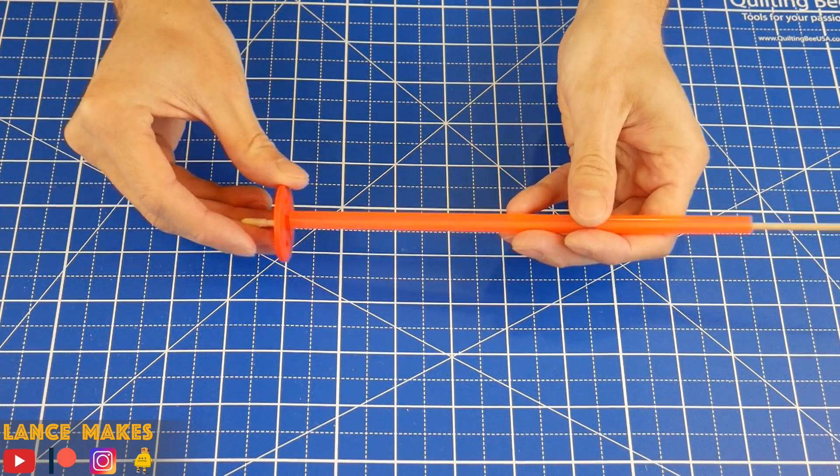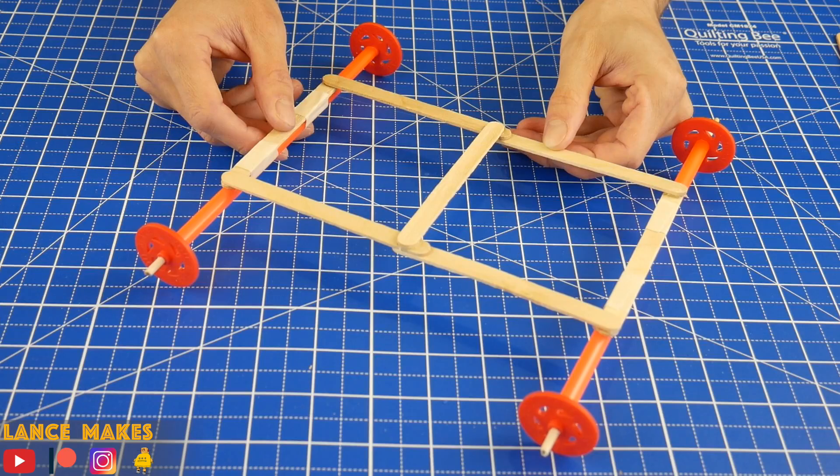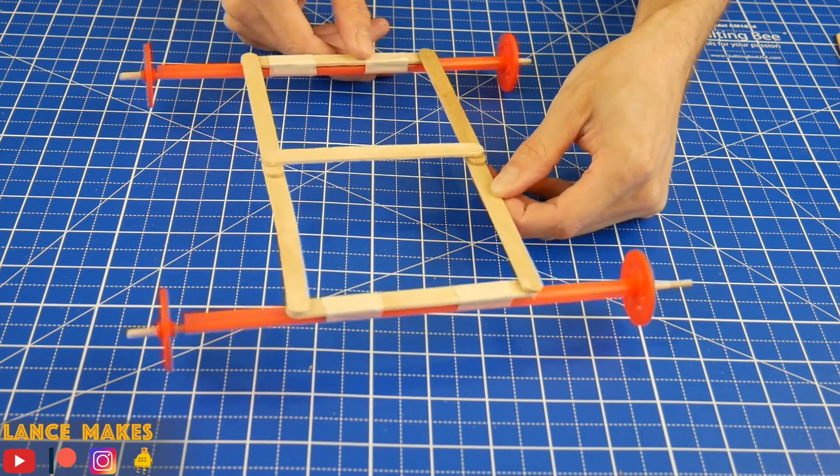Slip a straw over the dowel and put another wheel on the other side. Make sure it can spin freely. Repeat one more time, and then tape the wheels onto the frame.